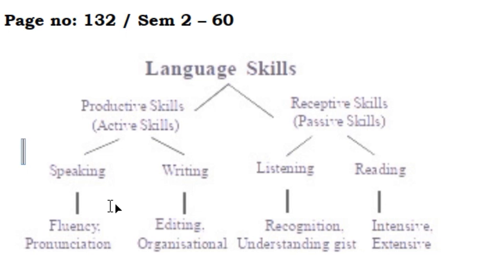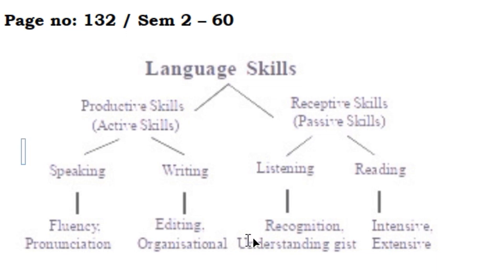Speaking is very important. It's about fluency — there is no barrier for speaking. We have pronunciation. Writing should mean the method for output. Organization should be organized. It is so important.